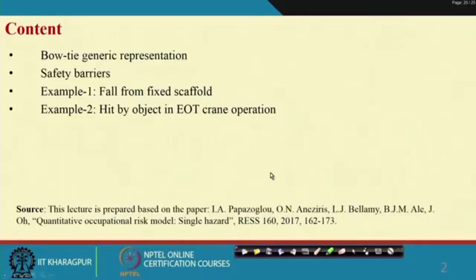First I will discuss the general representation of bow tie, then safety barriers, after that two different examples: one is fall from fixed scaffold and another one is hit by object in EOT crane operation.